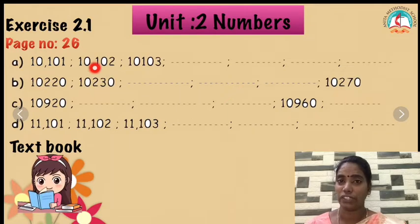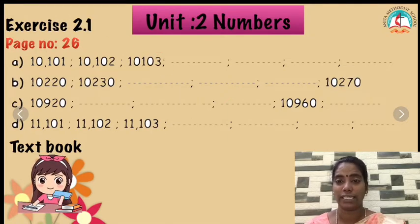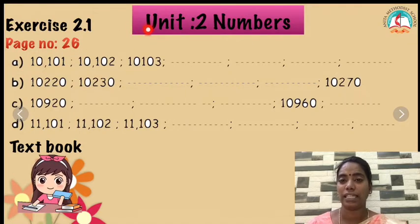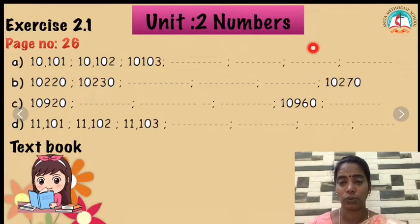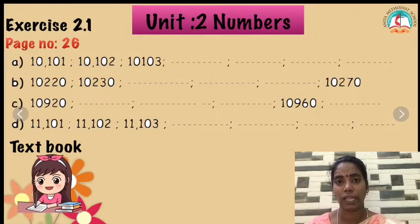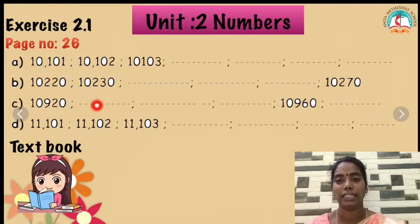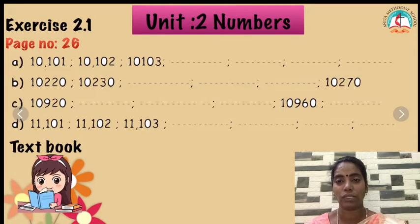The next one we are going to see: exercise 2.1, page 26. Children, you already know how to fill it, right? See, there is 10,101 — what is the next one? 102. So 10,000 — the place value stays as it is. It is only changing in the 101, 102, 103. So the 10,000 remains the same; we just change the 1s place.